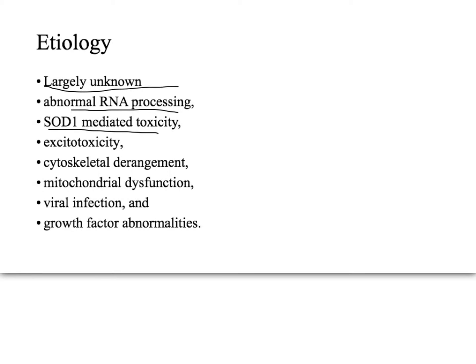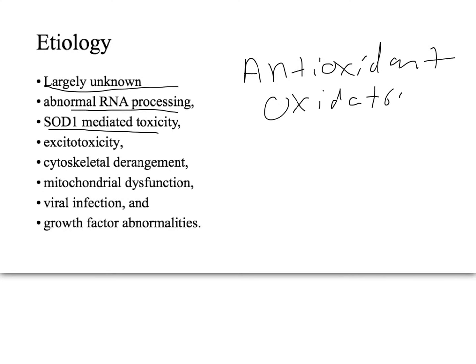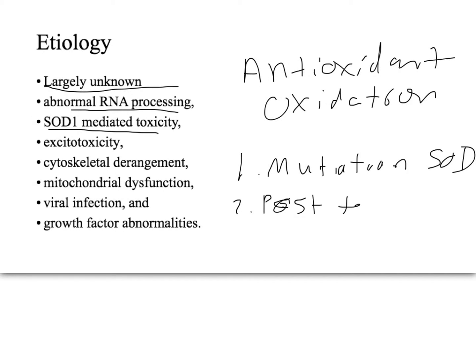With SOD1 — superoxide dismutase — it has both an antioxidant property and an oxidative property. The oxidative property works by acting through NADPH oxidase, and somehow it over-stimulates that enzyme and causes over-oxidation. This can happen through mutation of the SOD1 gene or through post-translational modification of the enzyme, which may explain why it only occurs in motor neurons — because whatever gene processes that modification may only be expressed there, or expressed differently through alternative splicing.